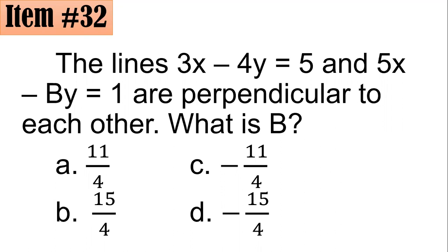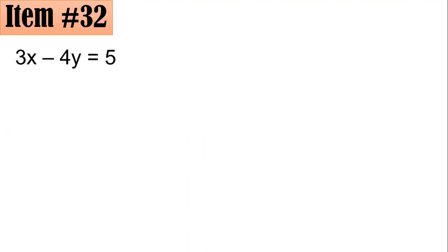Let's have item 32. The lines 3x minus 4y equals 5 and 5x minus by equals 1 are perpendicular to each other. What is b? Which of these fractions is correct — a, b, c, or d? For this one, you have to note that you need to express both equations in their slope-intercept forms to determine their slopes.